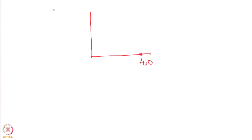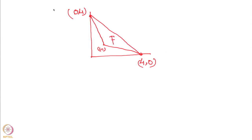Before we proceed to the proof, we will give a small example and then go for the proof. Let us consider the following simple situation: let us say F is given by the convex hull of the points (4,0), (0,4), and (1,1).